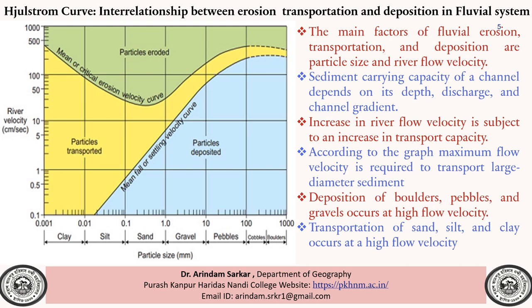According to the graph, the maximum flow velocity is required to transport large-diameter sediment such as pebbles, boulders, and gravel — these require high transport velocities. The deposition of boulders, pebbles, and gravel also occurs at high velocity. Transportation of sand, silt, and clay occurs at high flow velocity as well.